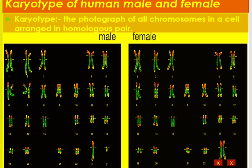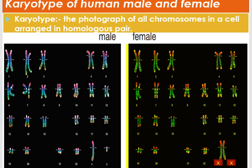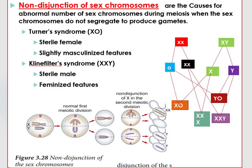Karyotype refers to the photograph of all chromosomes in a cell arranged in homologous pairs in males and females. You can see photographs of the male's 23 homologous pair arrangements on the left side, and the female's 23 homologous pair arrangements on the right side. There are many chromosomal mutations that can cause abnormal sex chromosomes in an organism.